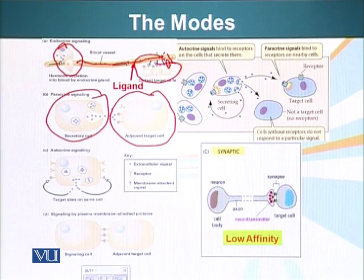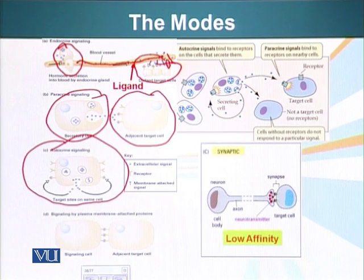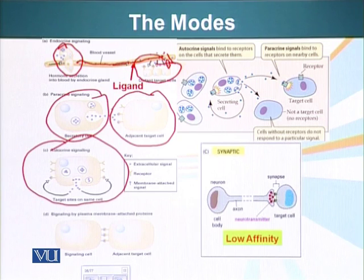Autocrine signaling is more predominant in, for example, the immune system. We will talk about this in more detail when we look at the immune system. Here, the cell is producing the signaling molecule or ligand, and that same cell has receptors on its surface that can bind that particular ligand. So the cell is producing a signal and responding to itself.